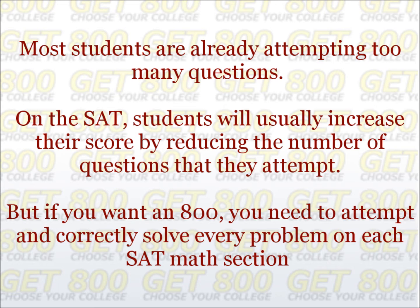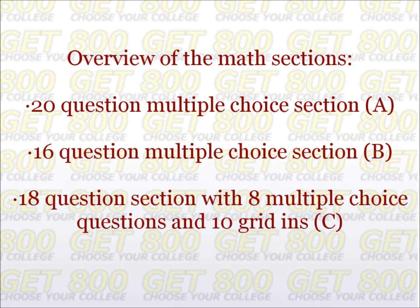First, let's have a quick overview of the math section on the SAT. There are three math sections in total. They can appear in any order. There is a 20-question multiple choice section, a 16-question multiple choice section, and an 18-question section that has 8 multiple choice questions and 10 griddins. Let's call these sections A, B, and C respectively.